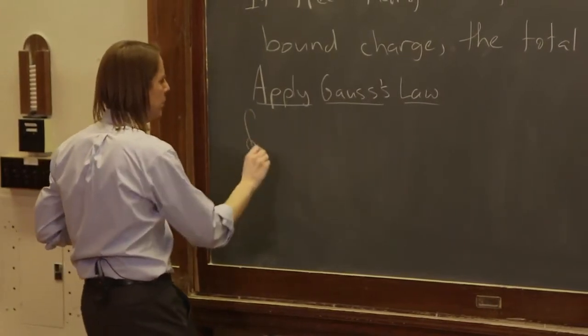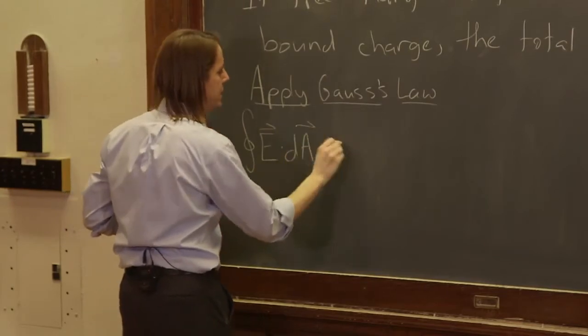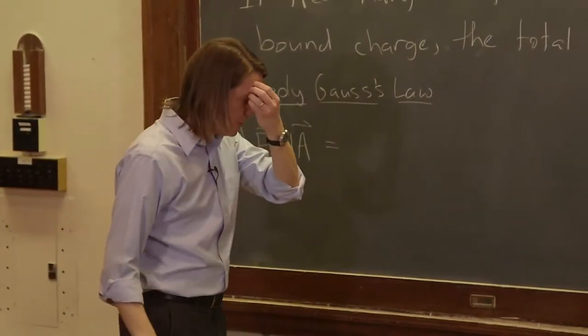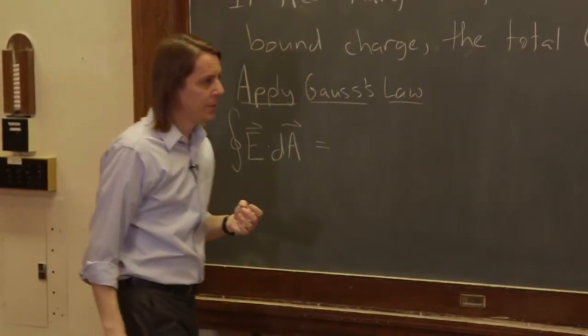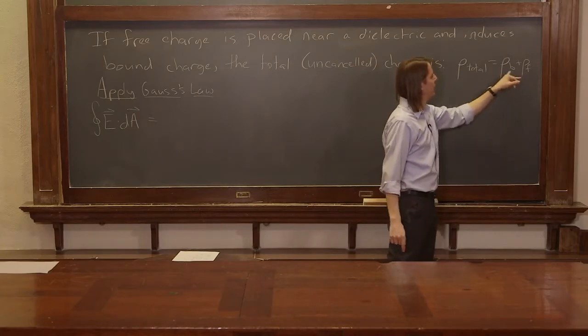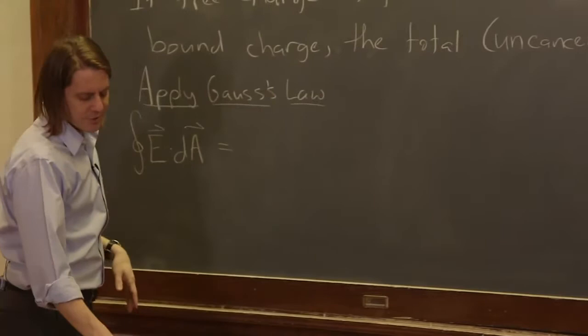Gauss's Law: the integral closed surface E dot dA equals what? It equals the charge enclosed over epsilon naught. So here is our total charge enclosed in that surface, rho bound plus rho free.